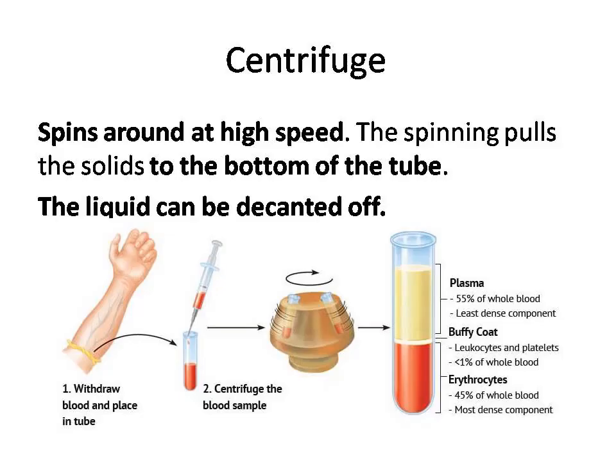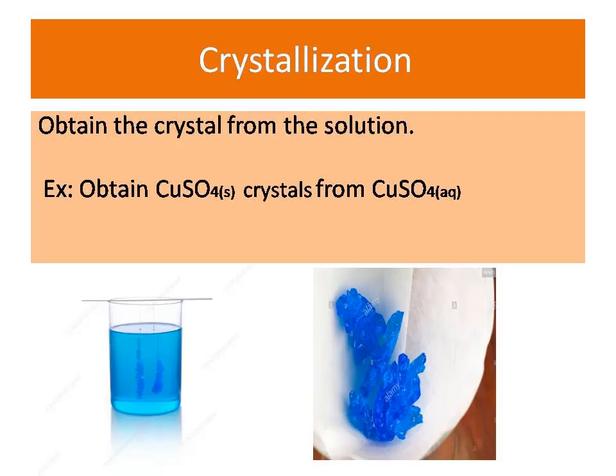Centrifuge is one of the most powerful separating techniques, especially in medicine. Spinning at high speed is applied to a sample containing solid and liquid. The solid is pulled down as a result of the centrifugal force, whereas the liquid remains in the upper part of the sample. The liquid can then be decanted off.